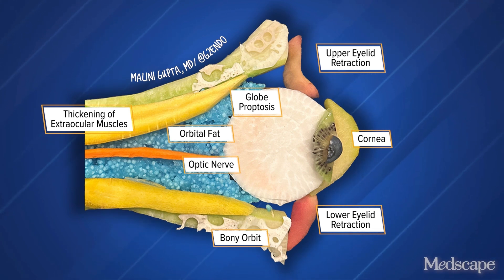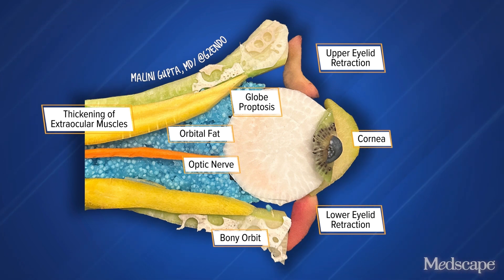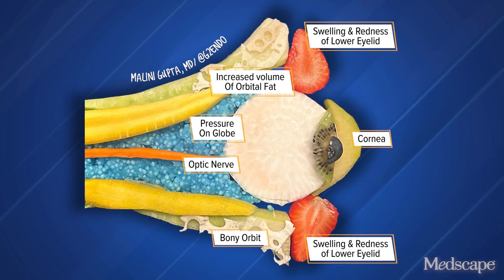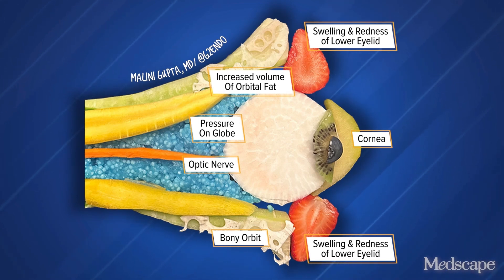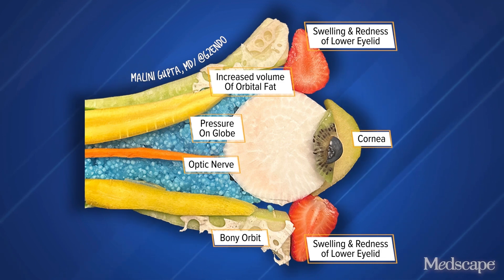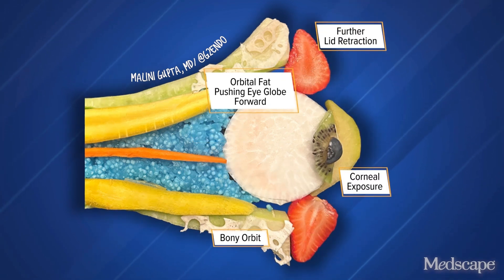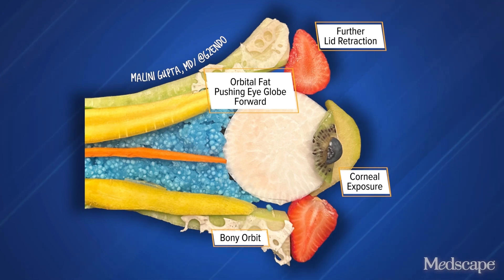The cytokines and the hyaluronans expand the orbital tissue, muscles, and orbital fat by drawing water into these tissues. As the orbital fat expands, there is proptosis so that the eyeball starts to push out from the bony orbit. There is swelling and redness of the upper and lower eyelids. There is pressure on the globe, causing pain at the back of the eye, further lid retraction, and pain.